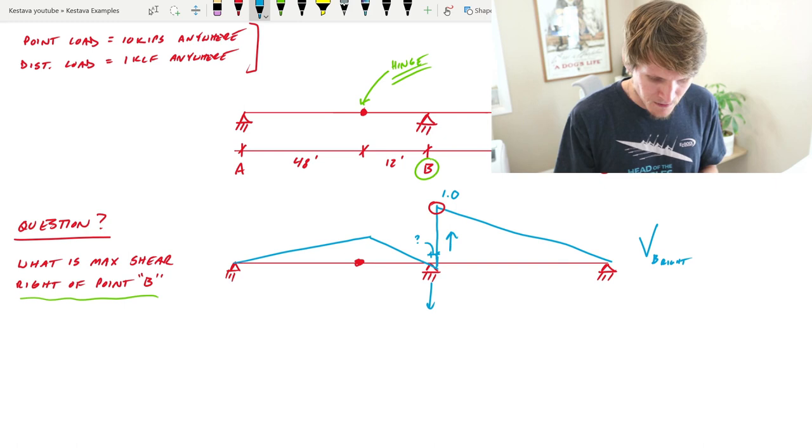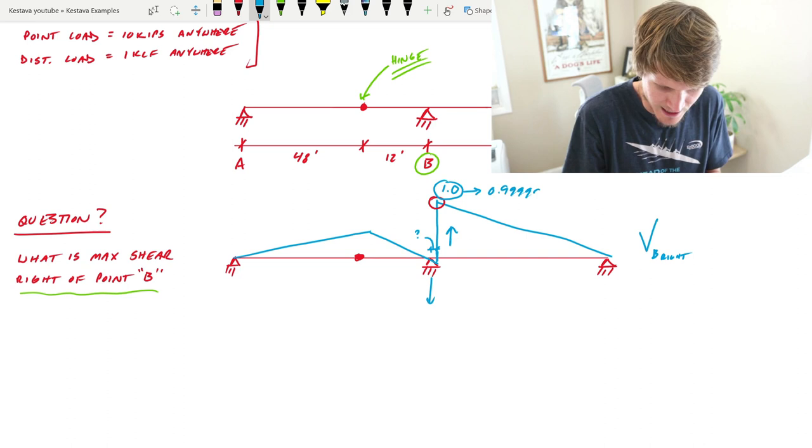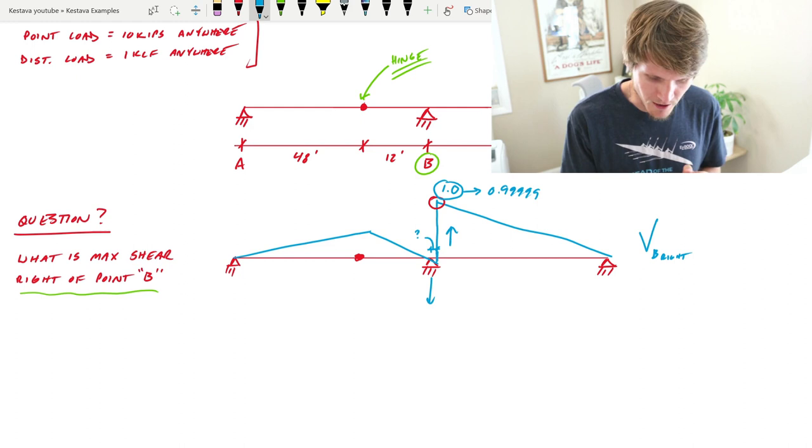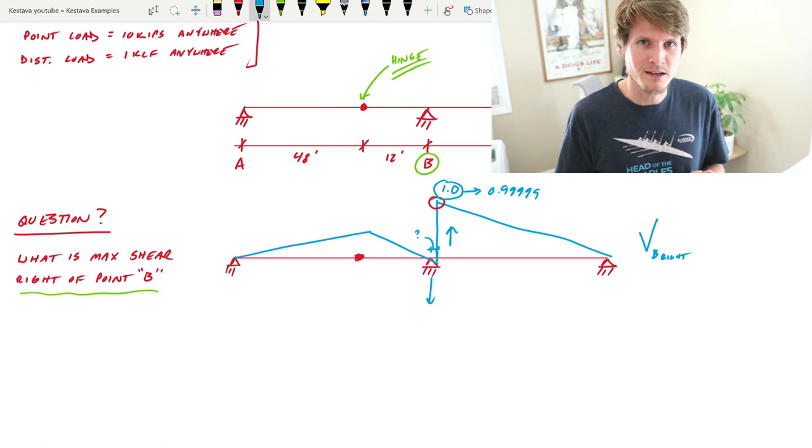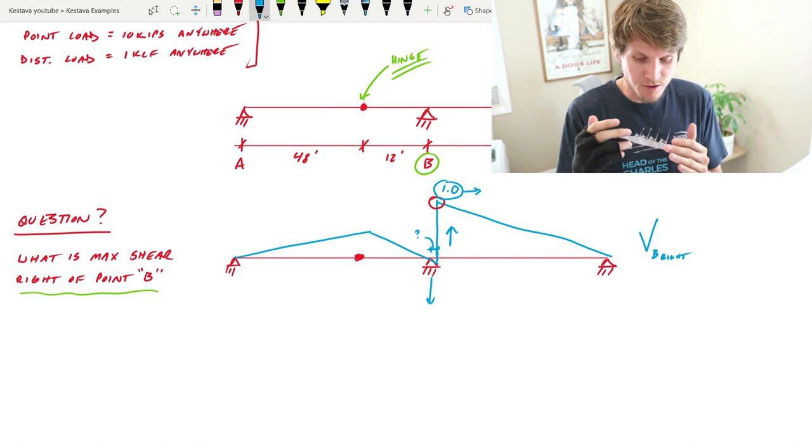Although I do have some distance here - some minuscule distance, I'll do a question mark - that's just for visuals. In reality, you are so microscopically close to your reaction point B that really this number 1.0 is approaching 1.0. It's like 0.9999 continued. The closer you get, the greater the maximum shear, but you can't say 1.0 because then you're actually located on point B, which is your boundary condition.